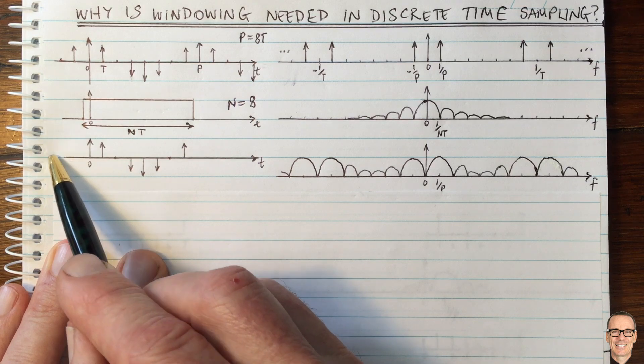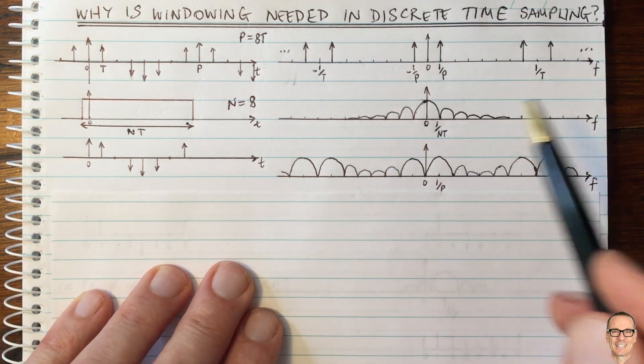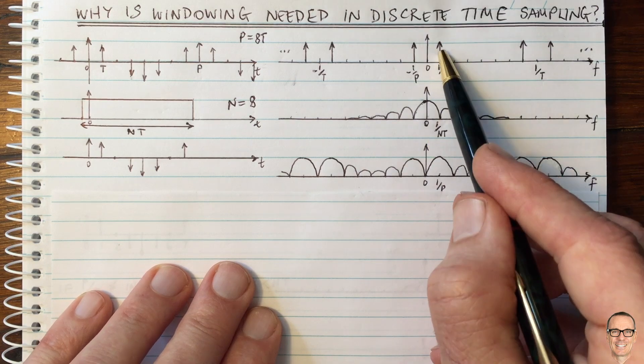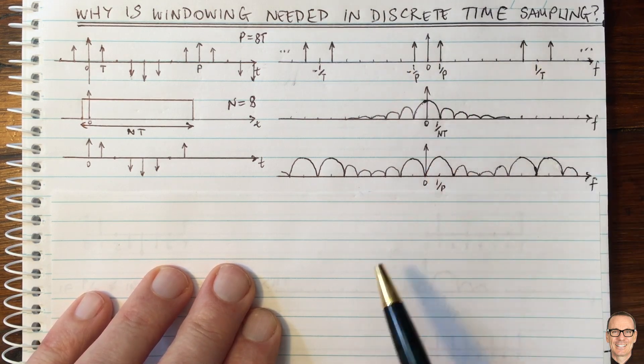which is zero all here and zero all here. That means we've convolved these two in the frequency domain. If you convolve a function with a delta function, then the function appears at the location of the delta function.